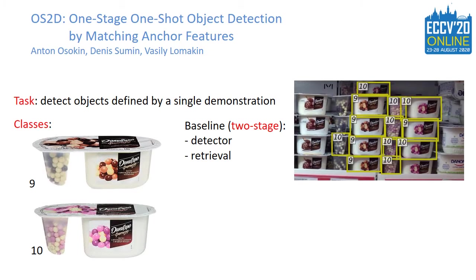One natural baseline for such a setting is a two-stage method. At the first stage, a detector of all objects merged to one class outputs candidate bounding boxes. The second stage is an image retrieval system that assigns the most relevant class to each box. Many state-of-the-art methods follow this path, but it has a major drawback: the detector needs to detect without knowing what to detect. So, as in this case, it can fail to generalize to visually different classes, and it confuses an object with an object part.